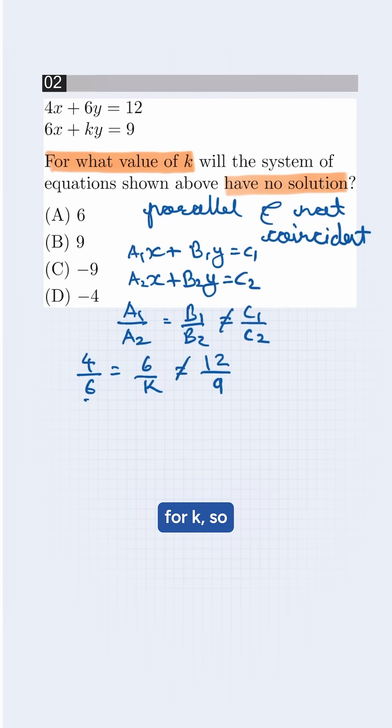We need to simplify for k, so it will be 2 by 3 equals 6 by k. Cross multiplying, it will be 2k equals 3 times 6, which gives us 2k equals 18.